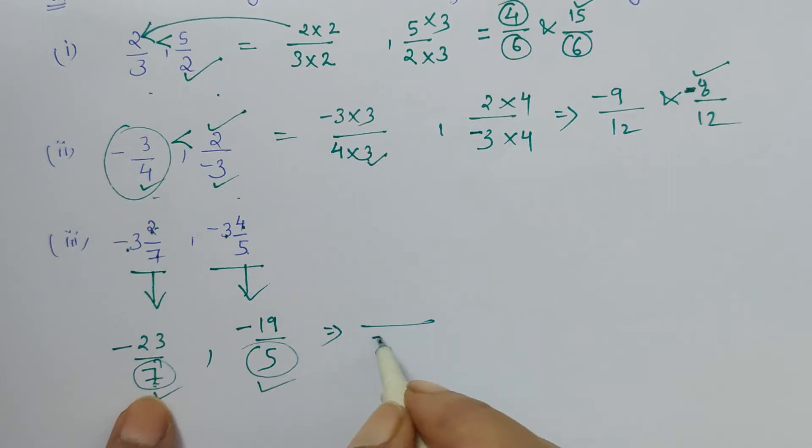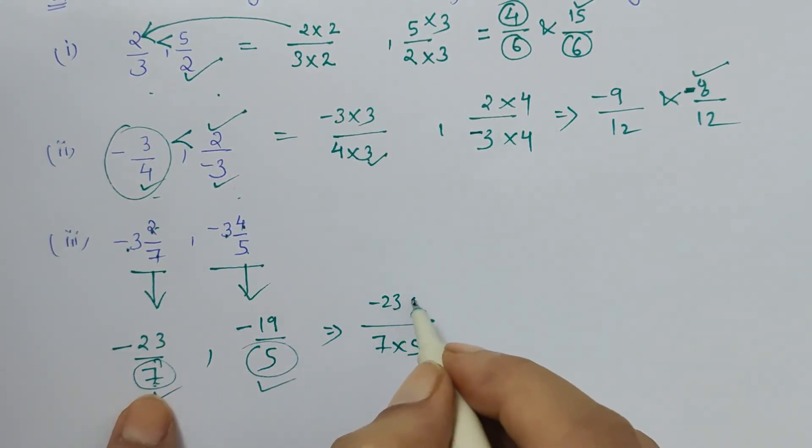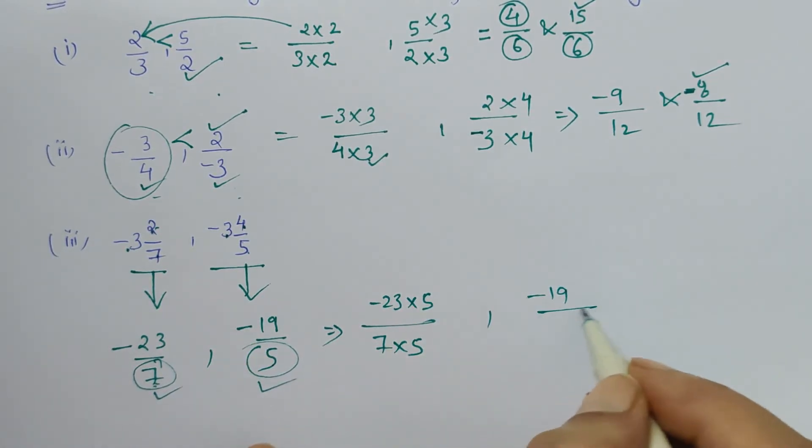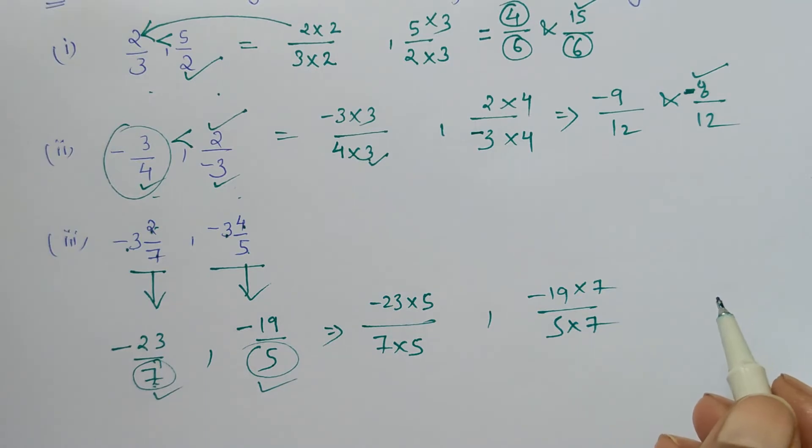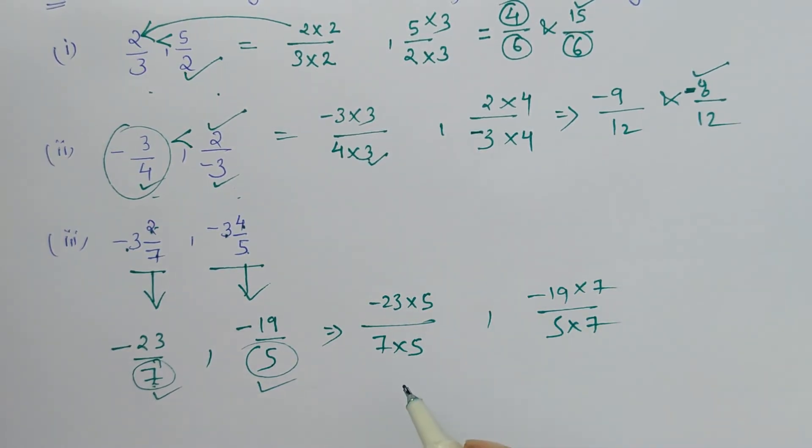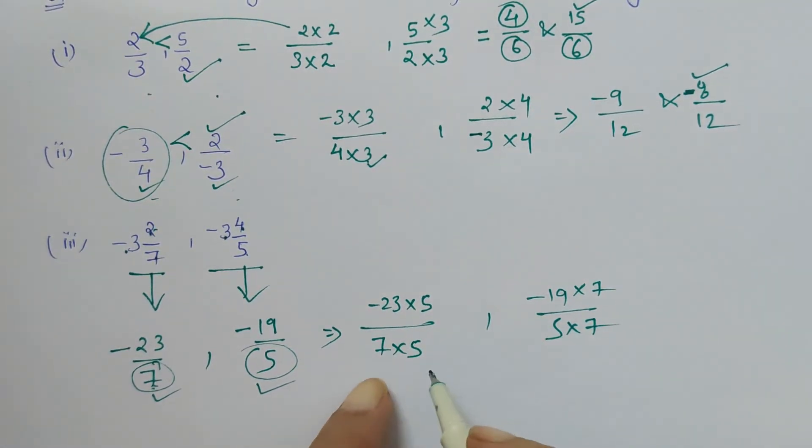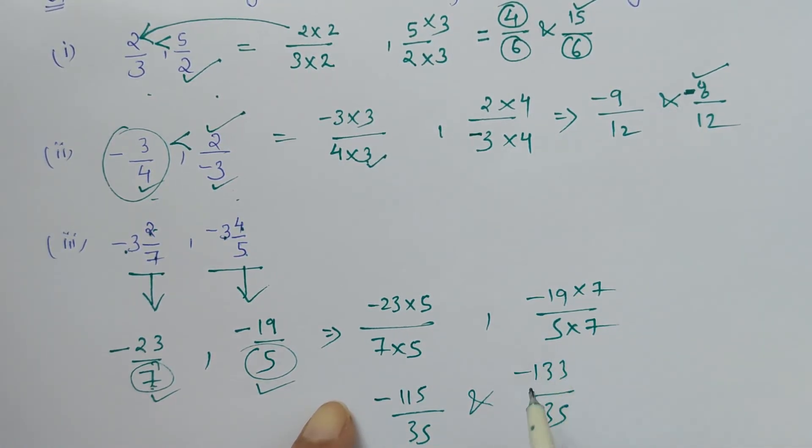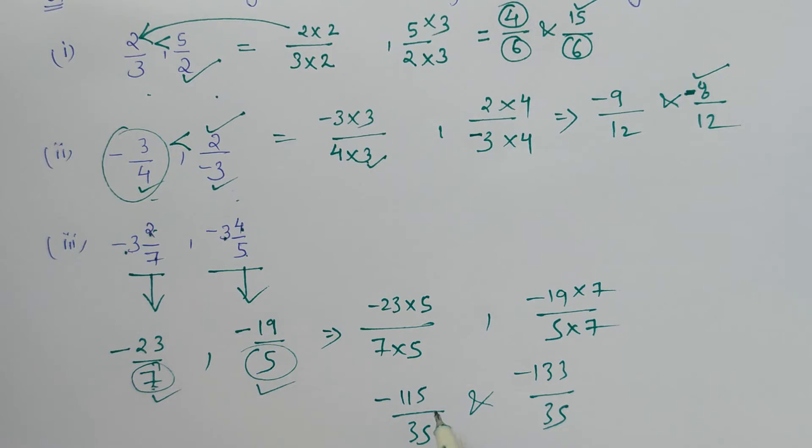So how we get 35? When we multiply 7 with 5, so numerator also gets multiplied by 5. And here when we multiply it by 7 we get 35. So here we get minus 23 into 5, which is minus 115 by 35, and this is minus 133 by 35.